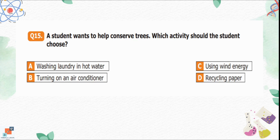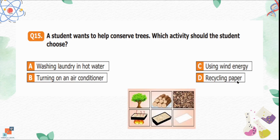Question number 15: A student wants to help conserve trees. Which activity should the student choose? Option A is washing laundry in hot water. Option B is turning on an air conditioner. Option C is using wind energy. Option D is recycling paper. Since paper is made using trees, recycling paper helps save trees. Option D is the correct option.